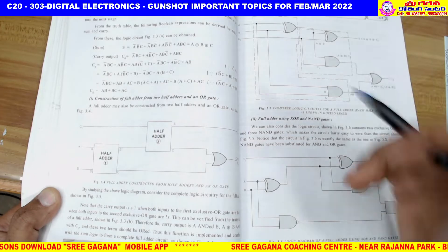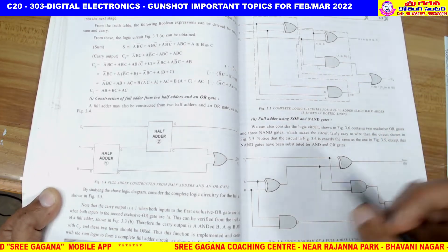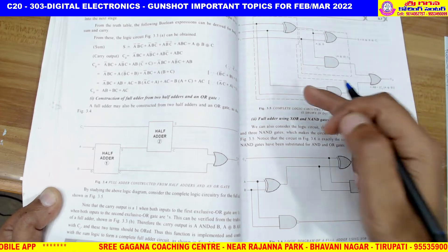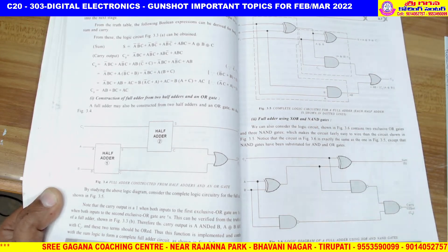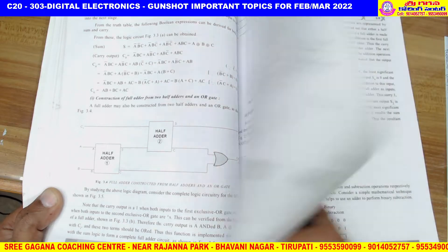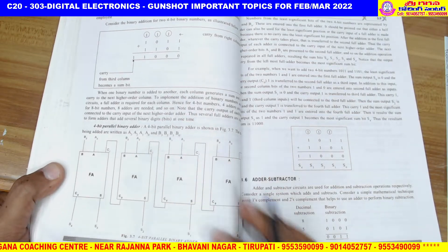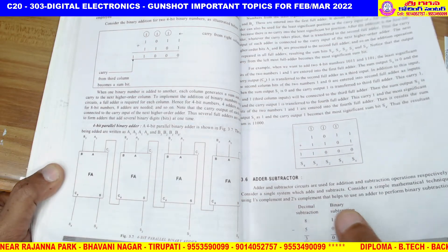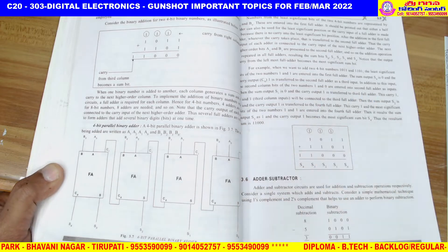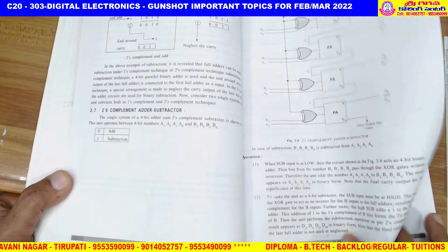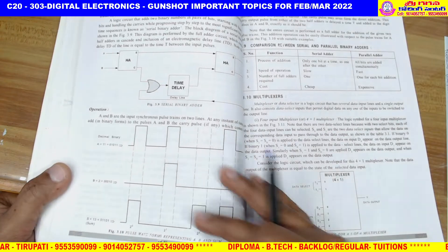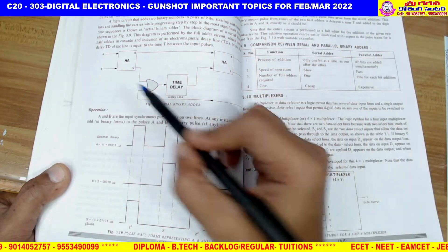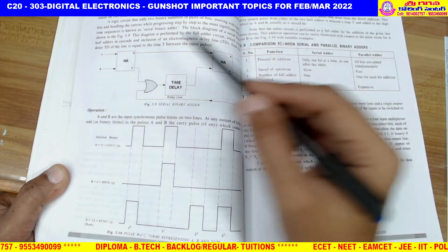NAND-NOR implementation is very important — you can implement adder circuits using only NAND gates. Also understand serial adders and parallel adders. In parallel adders, all inputs are given at the same time, while in serial adders, inputs are processed step by step, one at a time.